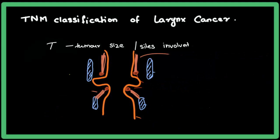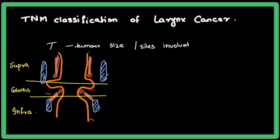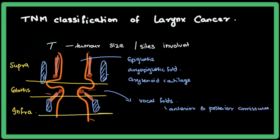The inner part of the larynx is lined by mucous membrane. The part involving the vocal folds is the glottis; below it is the subglottis (infraglottis), and above is the supraglottis. The glottis is about one centimeter in width. Supraglottis involves the epiglottis, aryepiglottic fold, and arytenoid cartilage. The glottis involves vocal folds and anterior and posterior commissures. The infraglottis extends up to the cricoid cartilage.